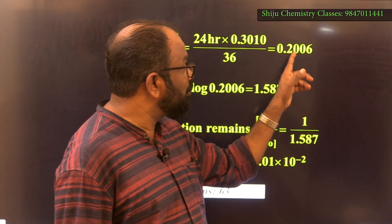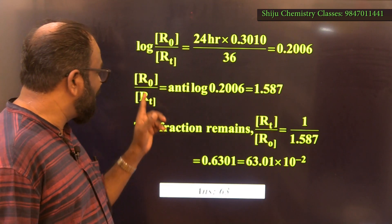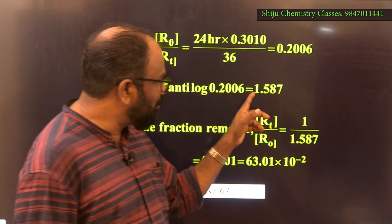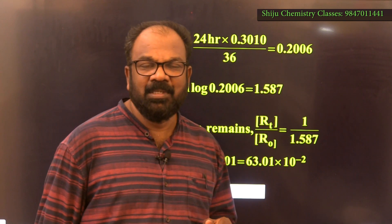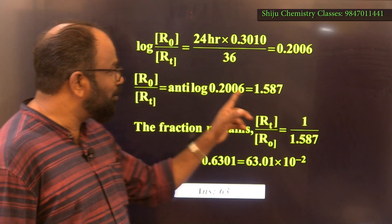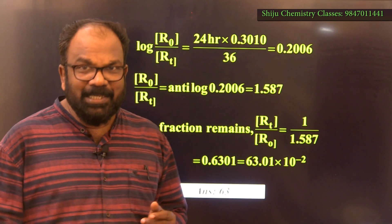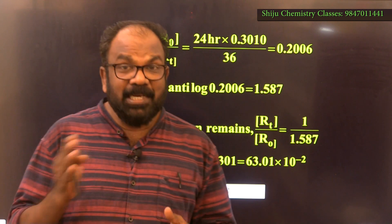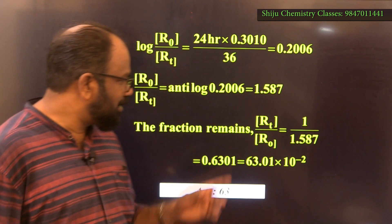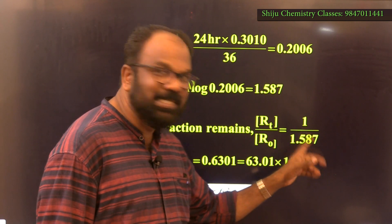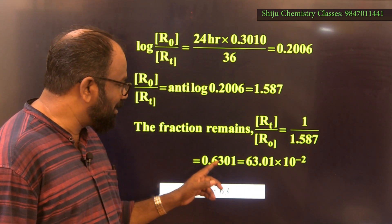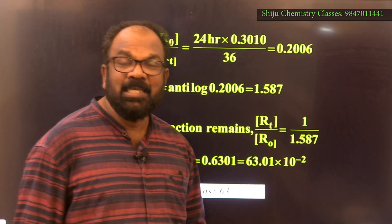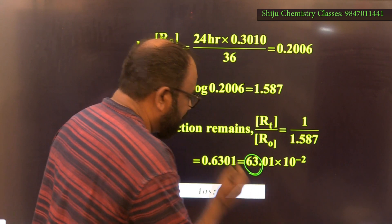Therefore R₀/Rₜ = antilog(0.2006) = 1.587. The fraction of bromine-82 remaining after 1 day is Rₜ/R₀ = 1/1.587 = 0.6301 = 63.01 × 10⁻². The answer is 63.01.